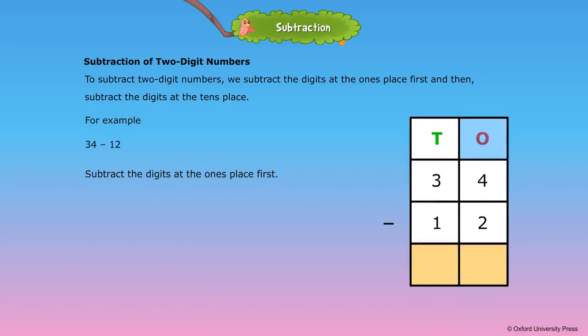Subtract the digits at the ones place first. 4 ones minus 2 ones is equal to 2 ones. Then subtract the digits at the tens place. 3 tens minus 1 ten is equal to 2 tens.